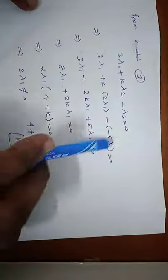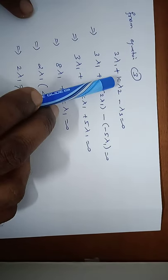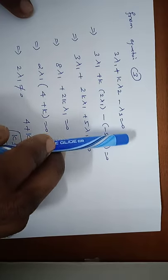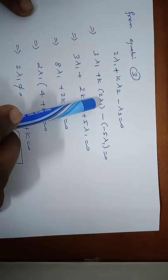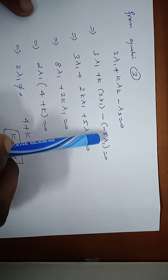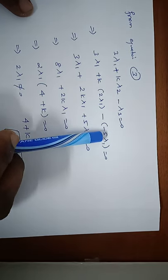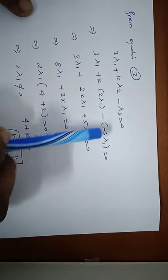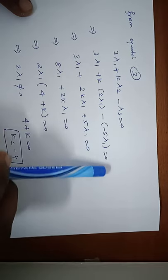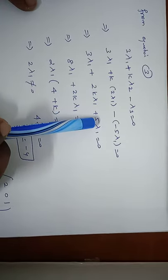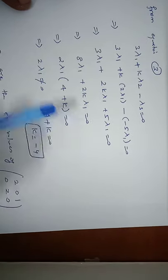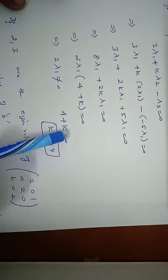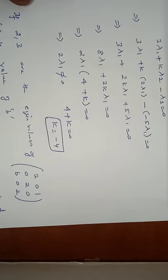From equation 3: 3·Lambda 1 + K·Lambda 2 - Lambda 3 = 0. Substituting Lambda 2 = 2·Lambda 1 and Lambda 3 = -5·Lambda 1: 3·Lambda 1 + 2K·Lambda 1 + 5·Lambda 1 = 0, giving 8·Lambda 1 + 2K·Lambda 1 = 0. Taking 2·Lambda 1 as common (non-zero): 4 + K = 0, so K = -4. Hence the first problem is solved.